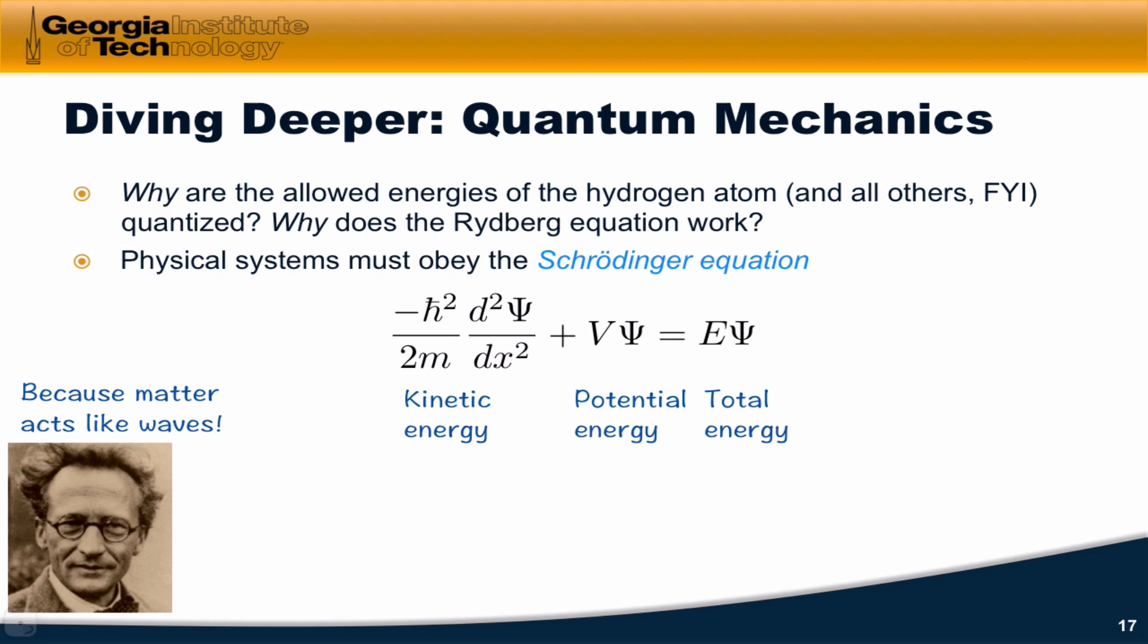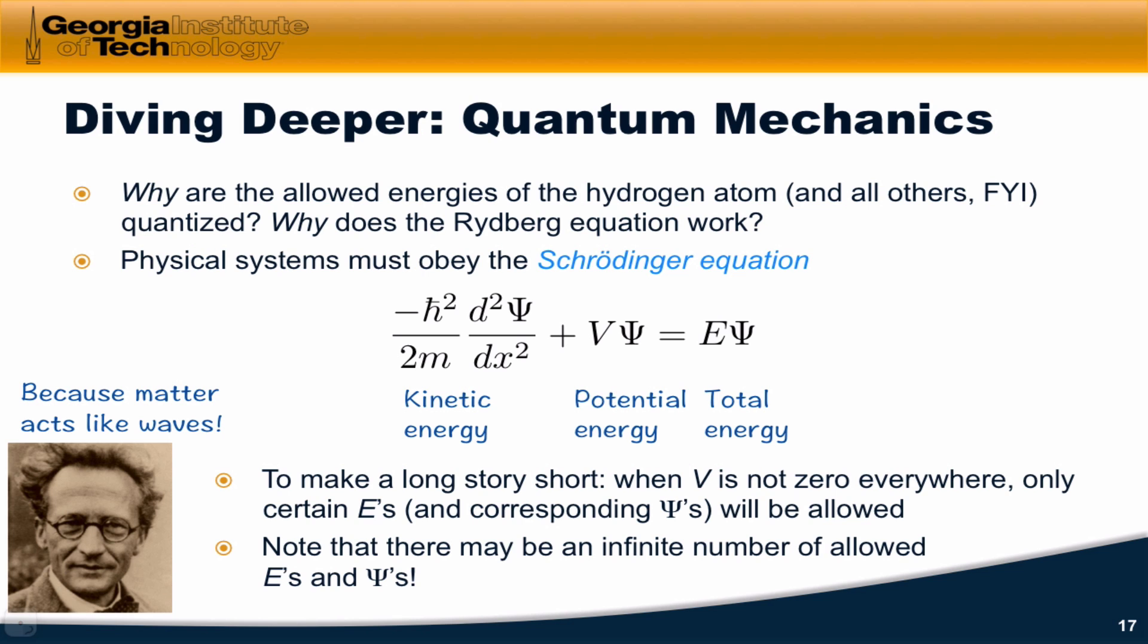When we take the kinetic and potential together, that's called the Hamiltonian, that must be equal to the total energy times the wave function on the right-hand side. And to make a very long story very short,